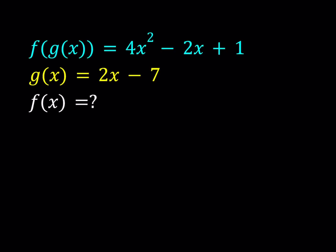Hello everyone. In this video we're going to be solving a functional system. We have the composition of f and g, f of g of x equals 4x squared minus 2x plus 1, and g of x is equal to 2x minus 7. And we're going to be solving for f of x.